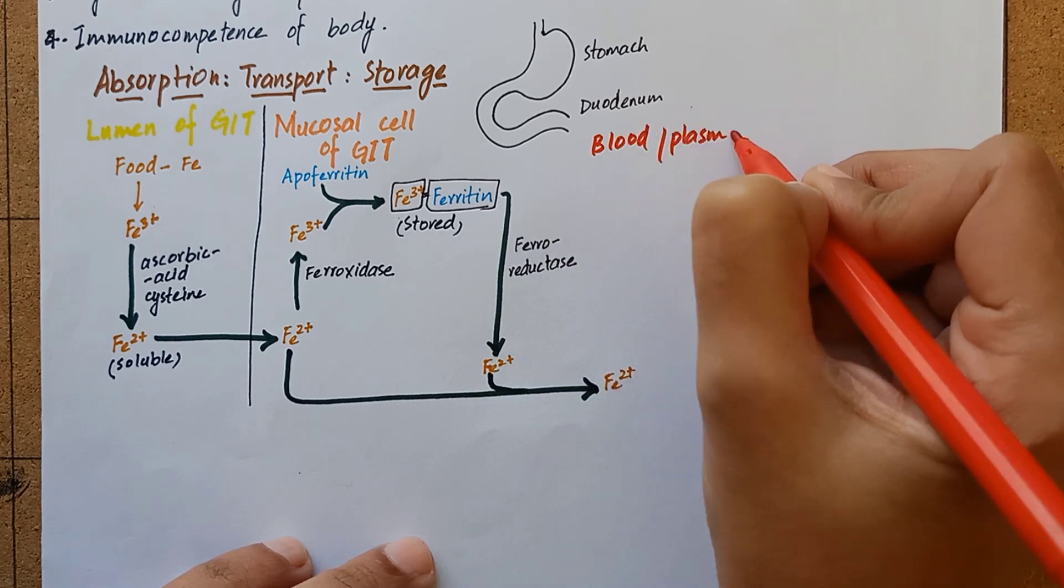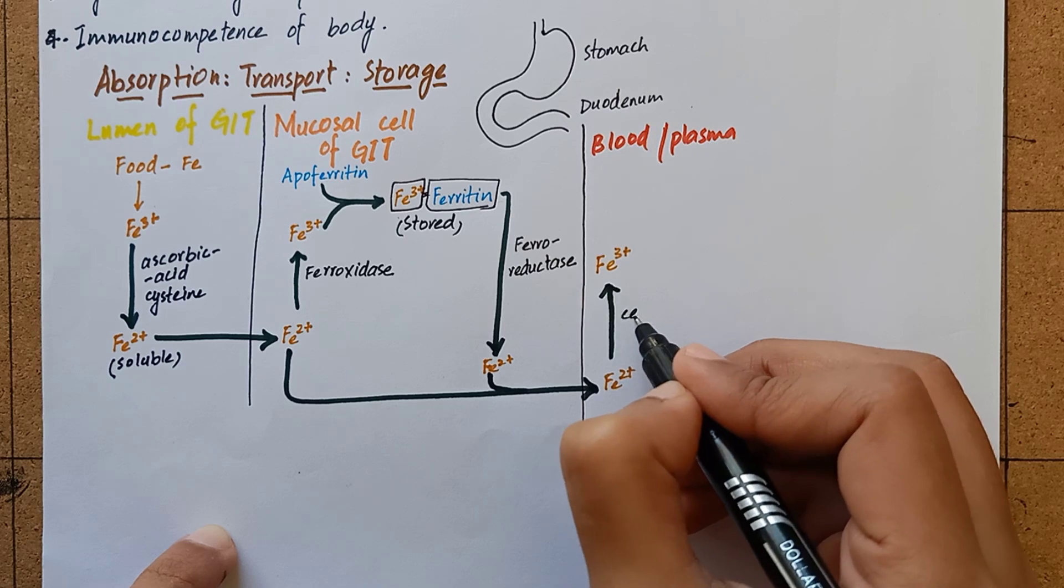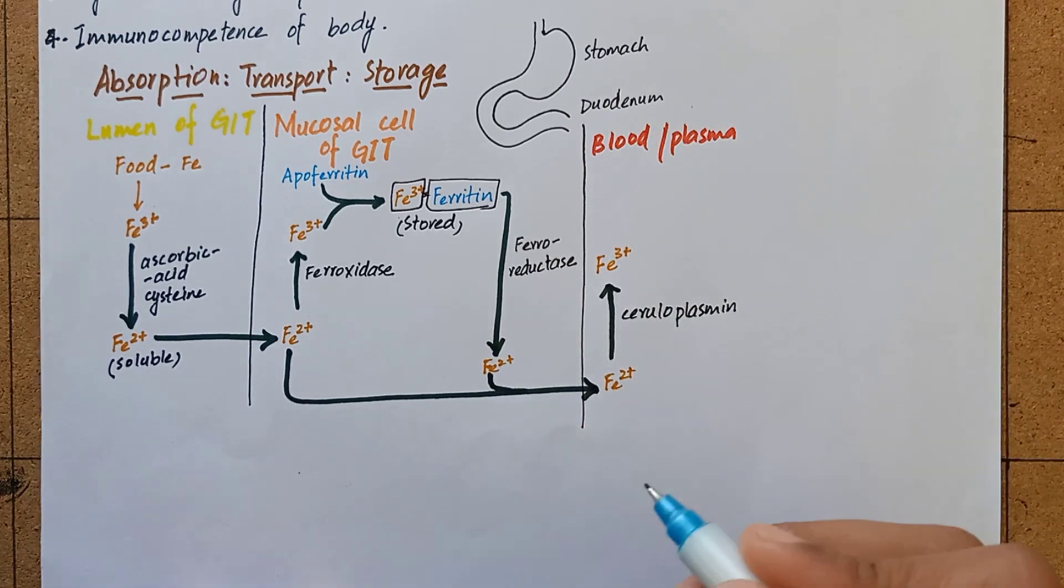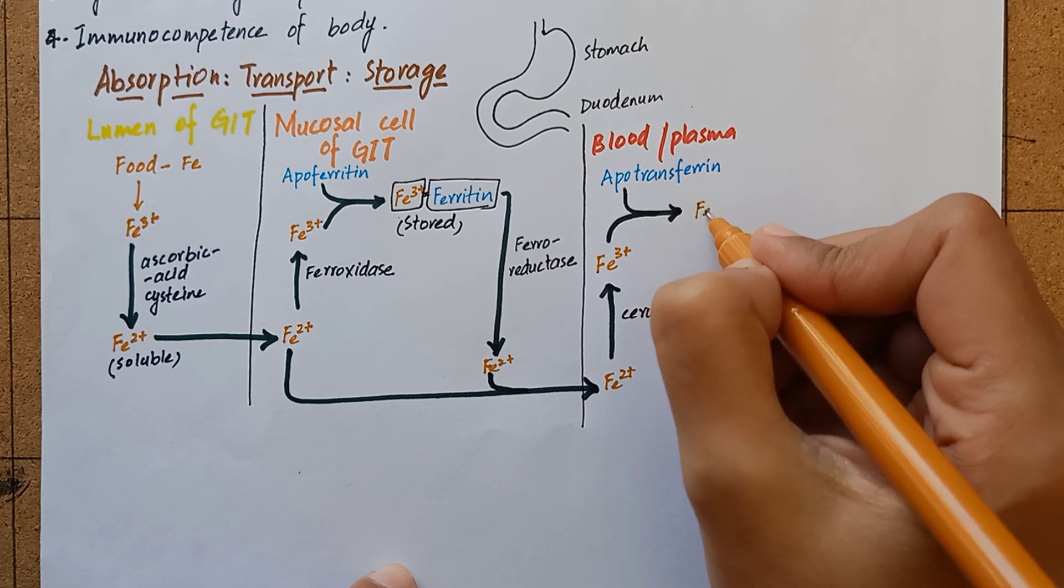In plasma, iron is again oxidized to ferric form by a copper containing protein called ceruloplasmin. Ferric iron then binds with specific iron binding protein called transferrin.